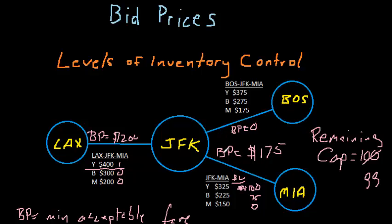In this case we would use the same math. We would sum the bid prices, but the bid price from Boston to JFK is zero, so the total bid price from Boston to Miami would be $175. We would accept all of these. So if it's equal to or greater than the bid price, the request is accepted.